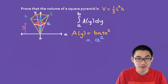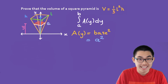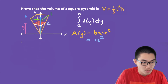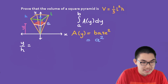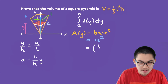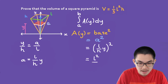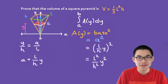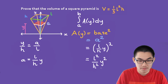Since we're integrating with respect to Y, we need to rewrite this in terms of Y. We can say that the height of the cross-section Y over the total height H equals the base of the cross-section A over the total base length L. So A equals (L/H) times Y. Substituting, A(Y) equals (L/H · Y)² which simplifies to L² divided by H² times Y².